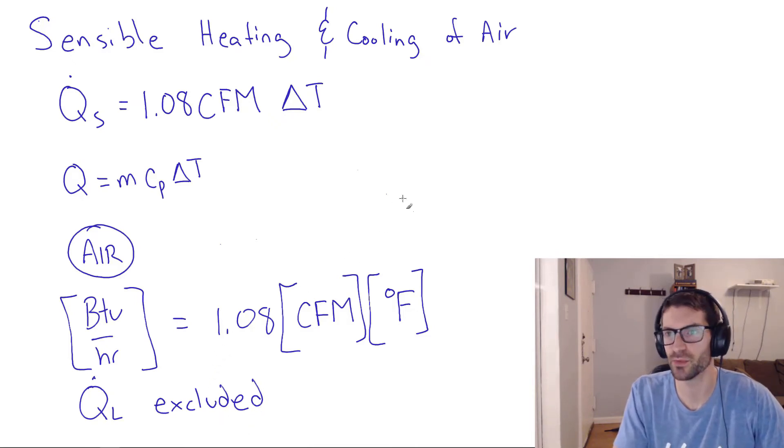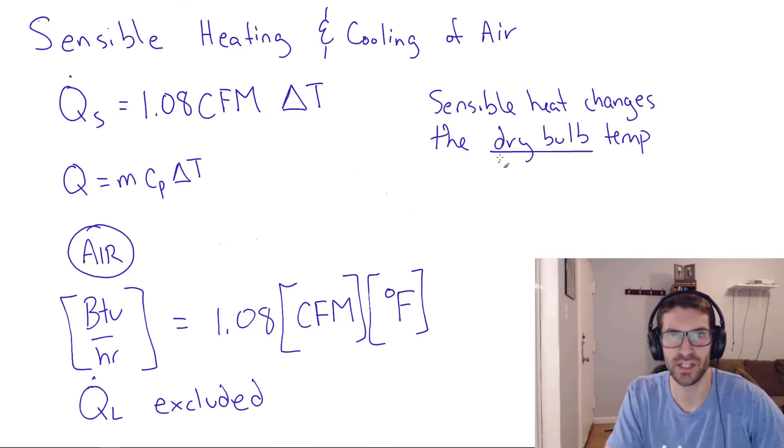And what is sensible heat? Sensible heat is the amount of energy that's coming in or out that changes the dry bulb temperature. It does not change the wet bulb or the dew point or the humidity ratio. So if we were looking at a psychrometric chart, then if you're doing sensible heating or cooling, you're moving horizontally to the right or left, not up or down whatsoever.